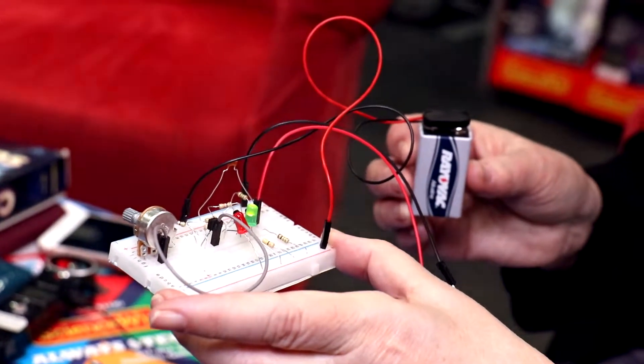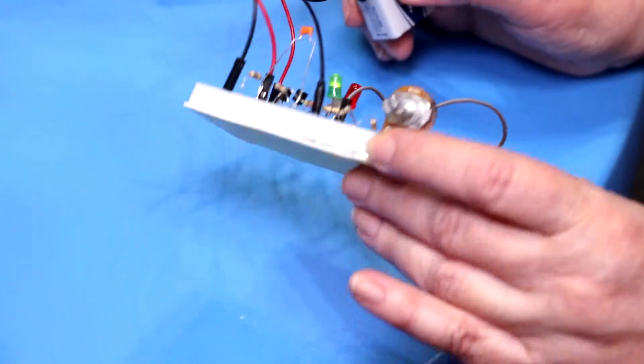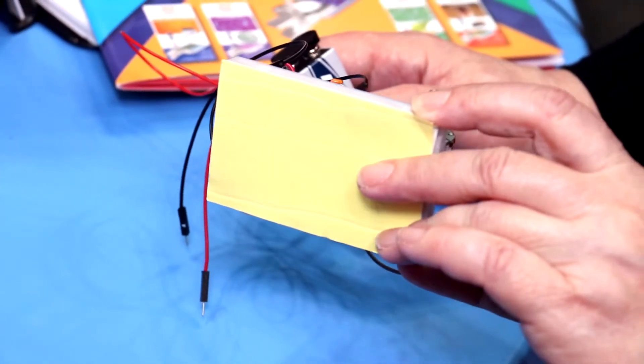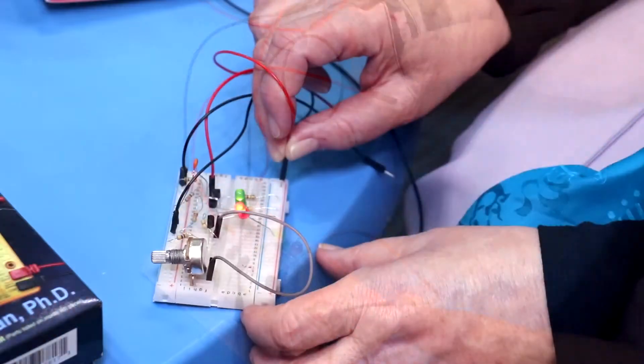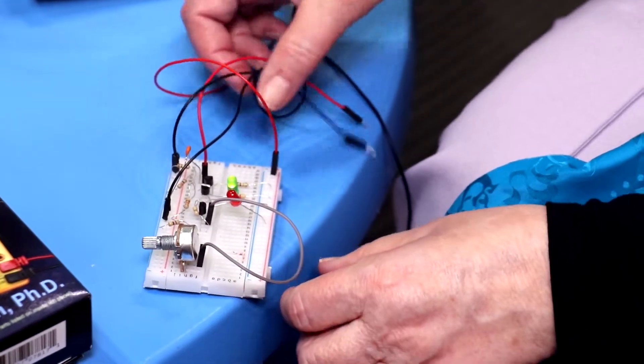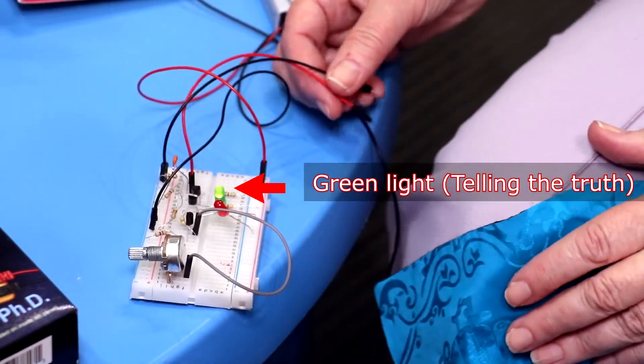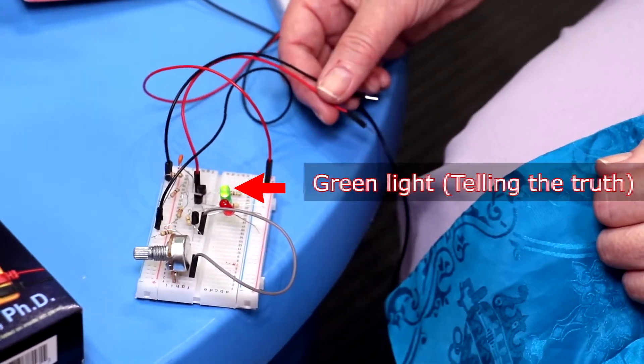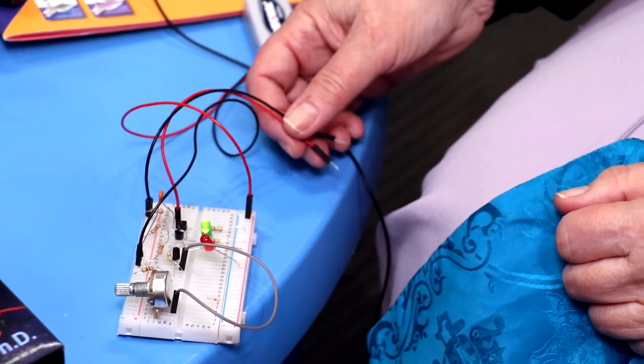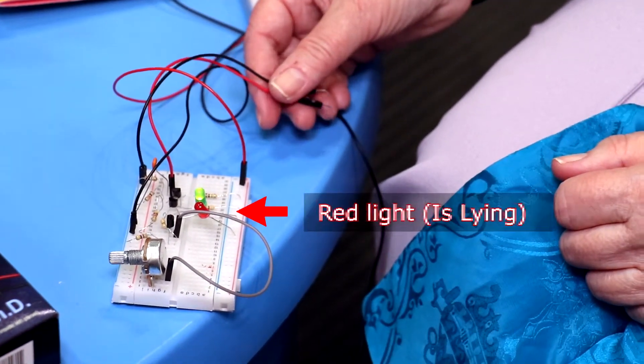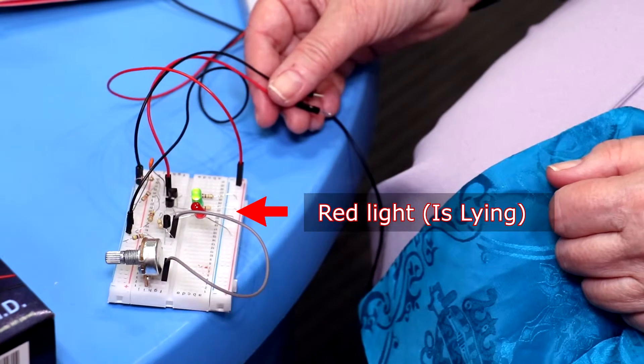This is the lie detector that you build and what I'm going to do is give it some power from the battery. So I'm going to plug in the power and you'll notice the light is green and as long as it stays green, I'm telling the truth. But if it should turn red or whoever you're testing turns red, well maybe they're lying.